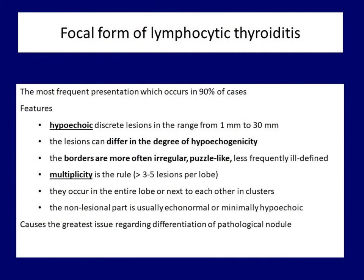The more frequent ultrasound appearance of lymphocytic thyroiditis is the so-called focal form — up to 95% of patients present with this. The main features of this subtype include that discrete lesions usually have irregular, lobulated, or spiculated margins. So not only are they hypoechoic, but they also present with irregular borders. This means that most of these lesions would belong to the most suspicious category in all classification systems if they were regarded as nodules.